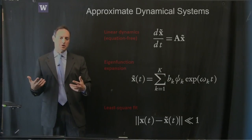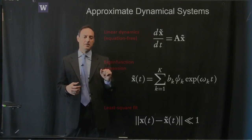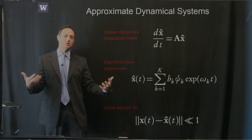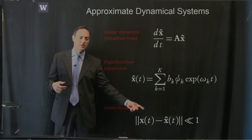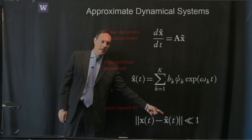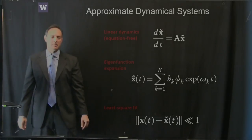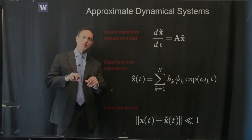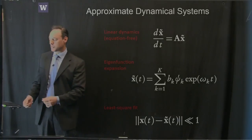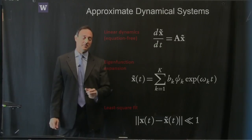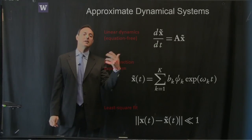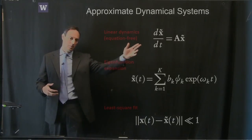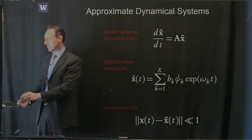What the dynamic mode decomposition does is take this approximate dynamical system x-tilde and give you the best-fit linear dynamical system to your data. You have your actual data x(t) and your linear dynamical system x-tilde, and you want this distance minimized in an L2 sense — that's what DMD does. Here we are limited to constructing linear dynamical systems, and there's a lot of effort to figure out how to construct nonlinear dynamical systems from data.